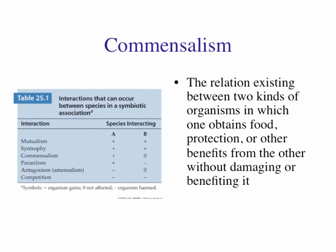Commensalism is one in which one organism benefits significantly and the other is not harmed. For example, the bryophyte plant that lives in tropical tree canopies does not cause any harm or benefit to the tree, but by being above the ground it's exposed to better sunlight. This relationship exists where one organism obtains food, protection, or some benefit, but it doesn't harm or benefit the other organism.